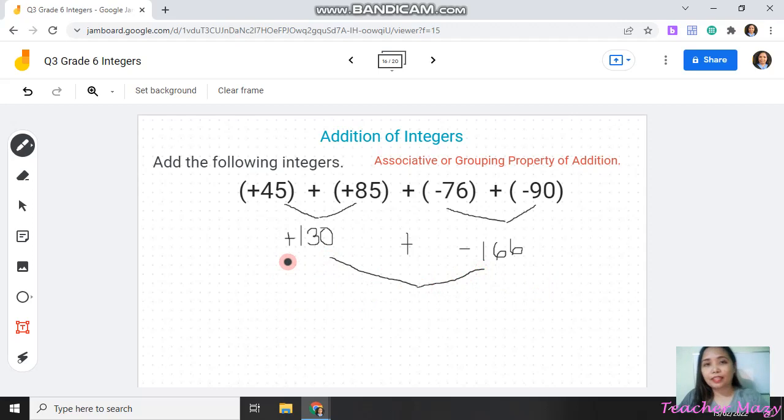Since the given has different sign or unlike sign, one is positive and the other one is negative, we need to subtract its absolute value. So, that is 166 minus 130 and the answer is 36. And of course, we need to observe which integer has bigger absolute value. For this one, it's 166 and 130. 166 is bigger than 130, so the sign of our sum is negative.